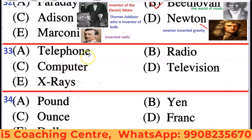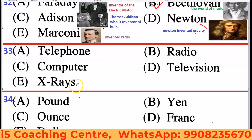Next: Telephone, Radio, Computer, Television, X-Ray. All except X-Ray are electronic media. Telephone, Radio, Computer, and Television are all electronic media. X-Ray is not electronic media. So X-Ray is the odd one out.